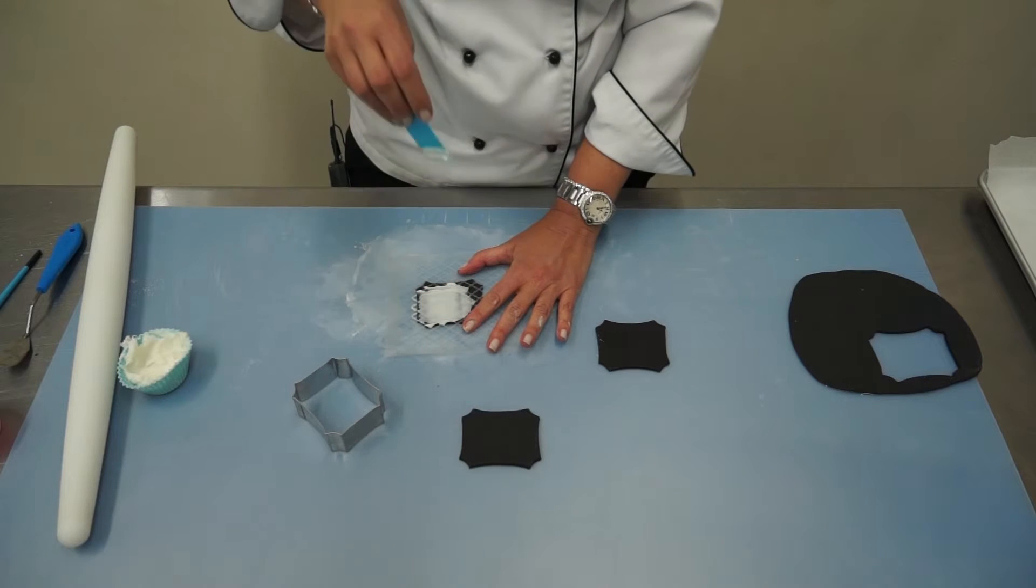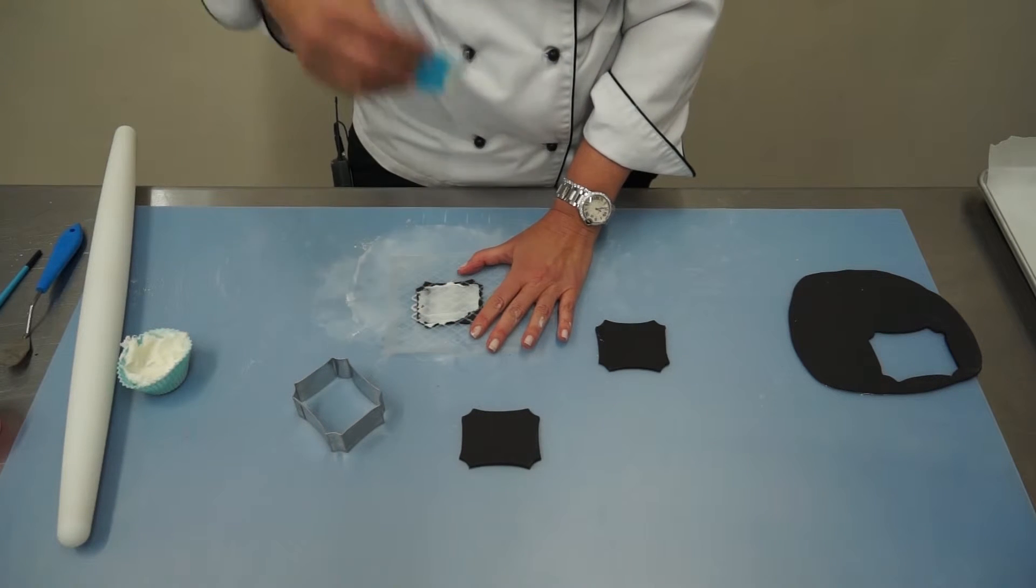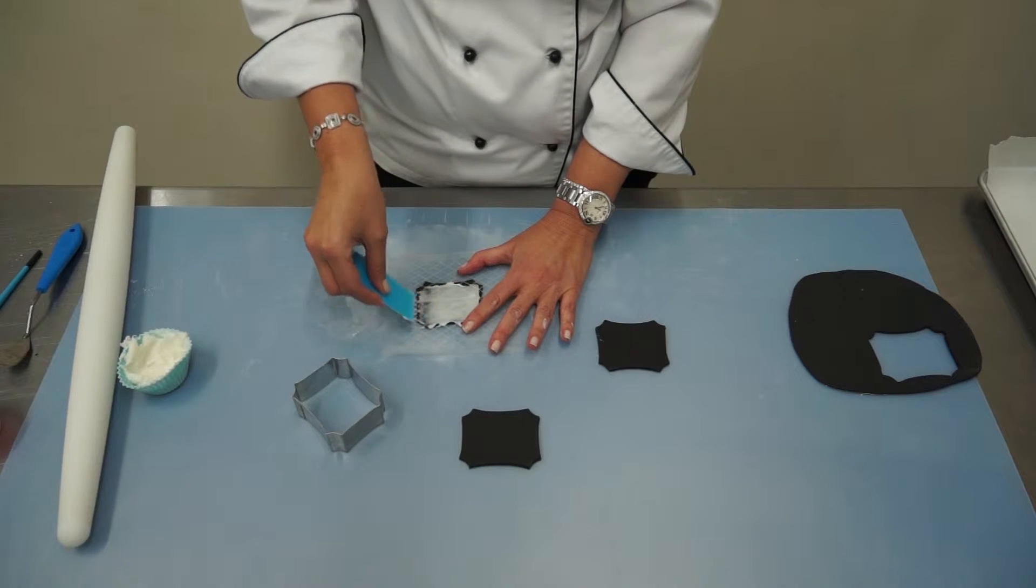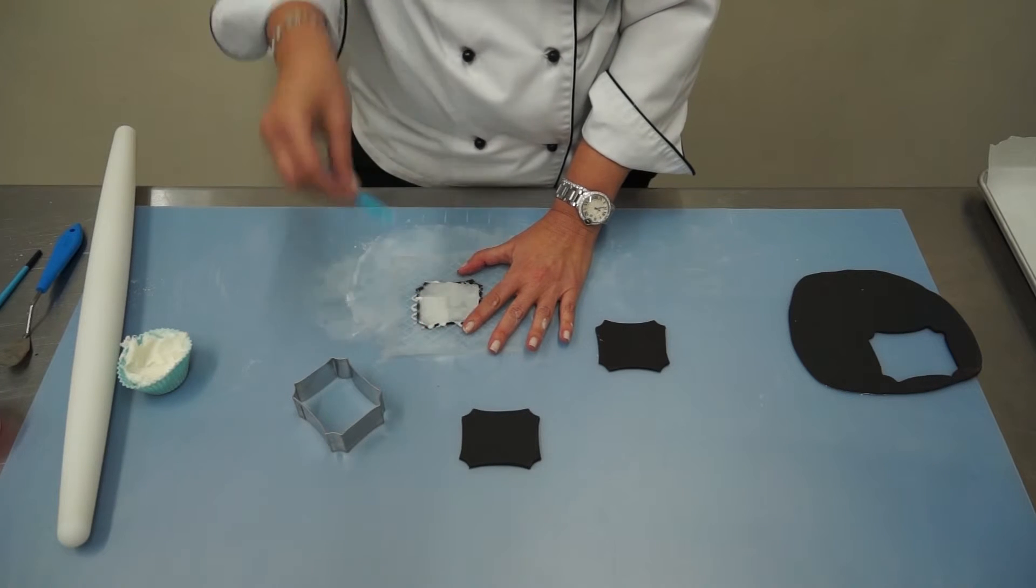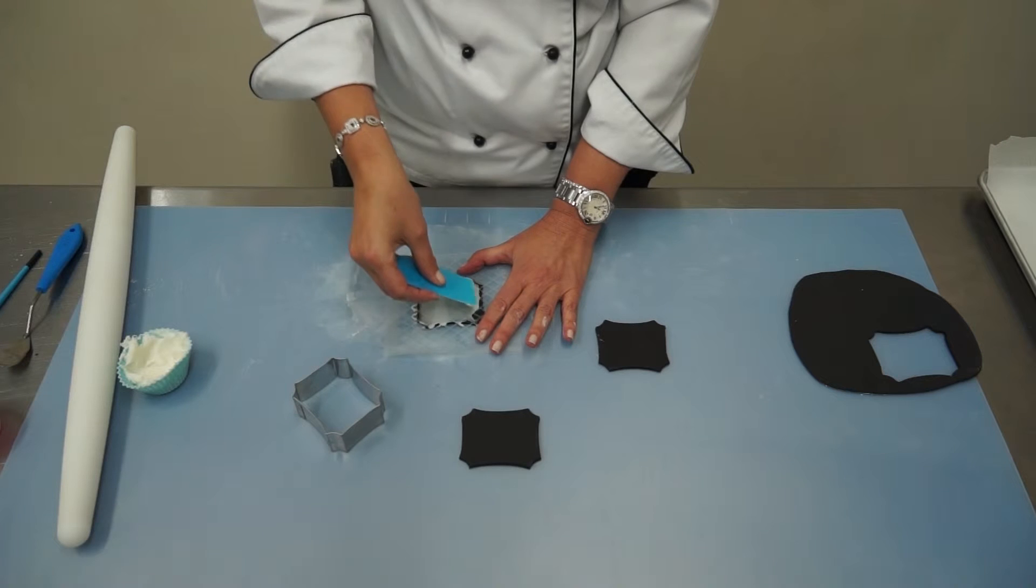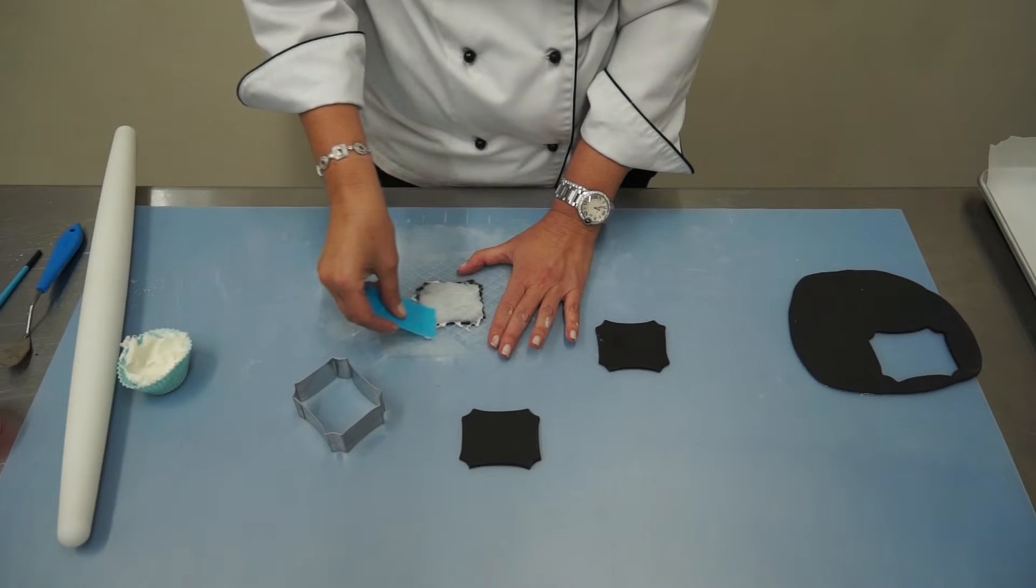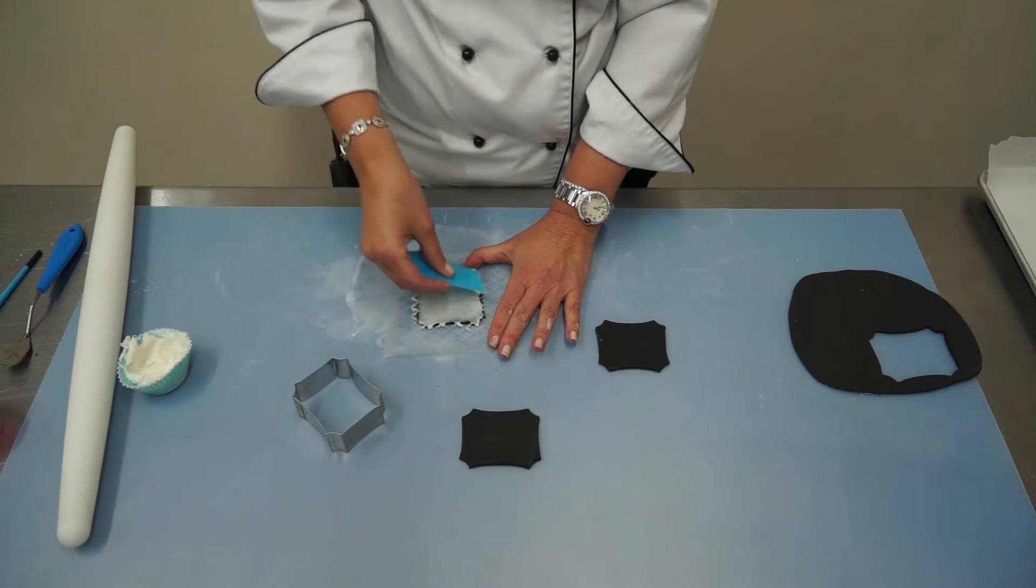The harder you push, the more icing comes off, so the lighter your pattern will be. The less you push, it'll be thicker on your cookie or fondant. I'm giving it like a medium pressure.